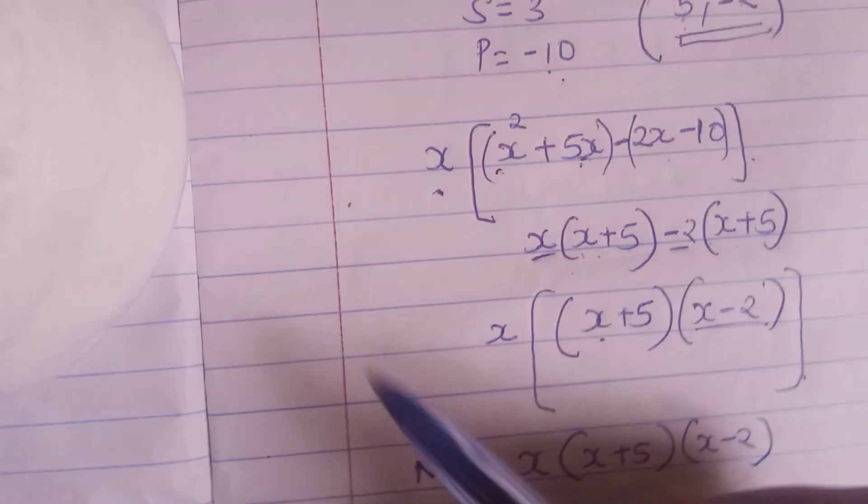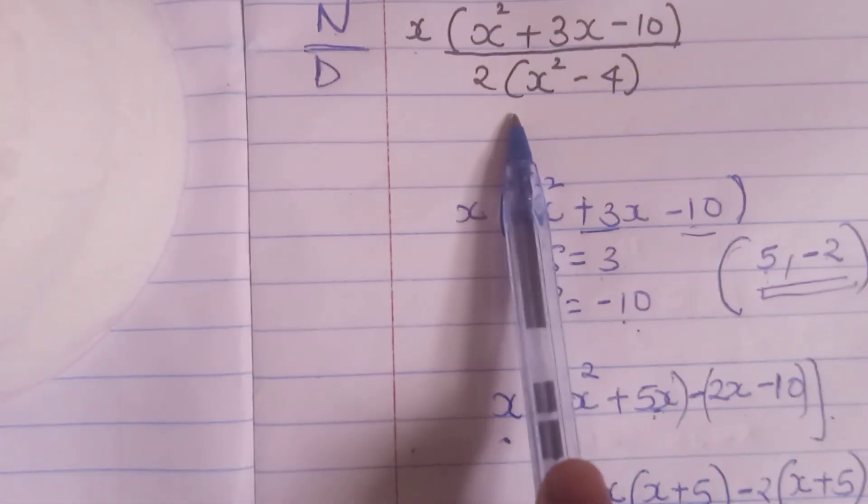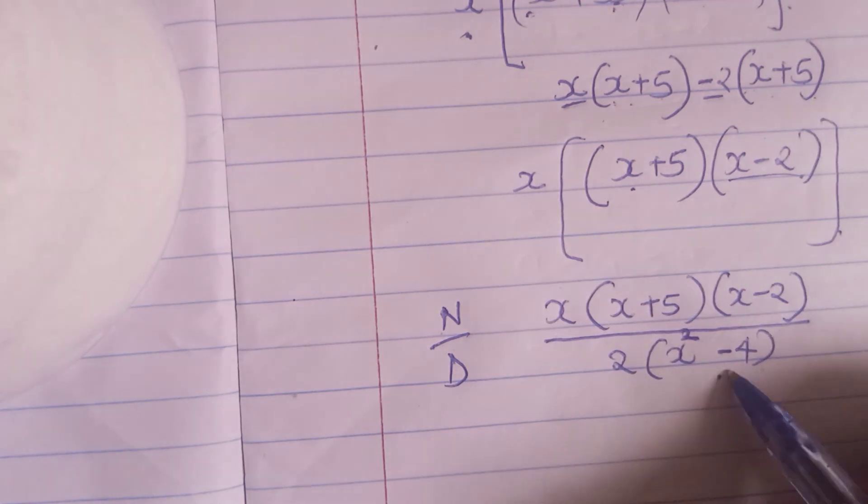Remember this was our numerator. We initially had our denominator here that I'm going to take it over our denominator which is 2 into x squared minus 4. So we can convert this denominator into the difference of 2 squares. So we'll have x minus 2 squared, the difference of 2 squares.